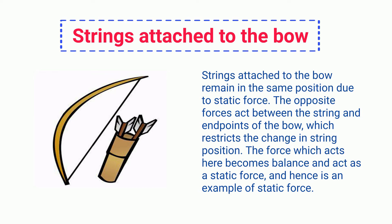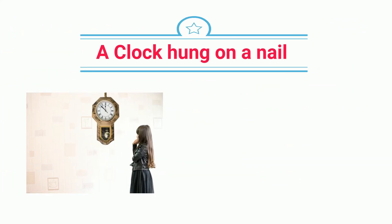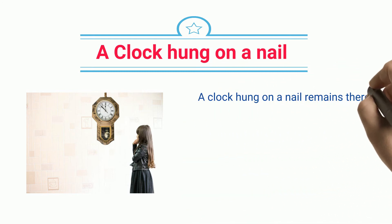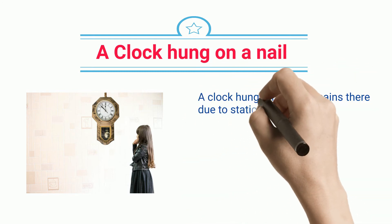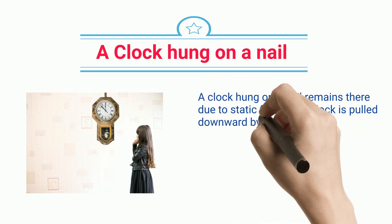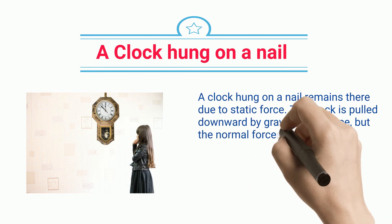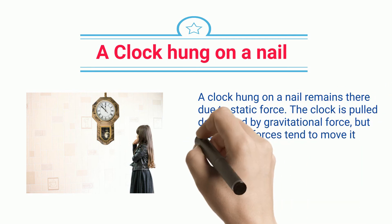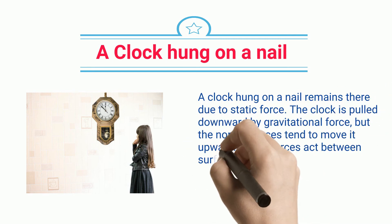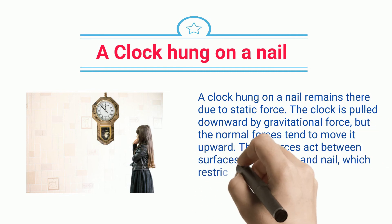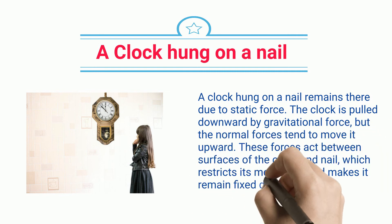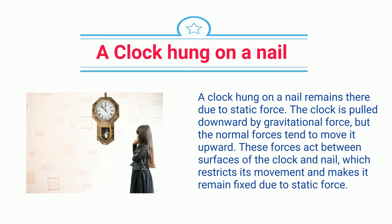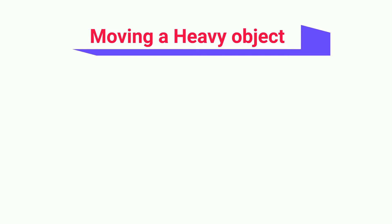A clock hung on a nail remains there due to static force. The clock is pulled downward by gravitational force, but the normal forces tend to move it upward. These forces act between the surfaces of the clock and nail, restricting its movement and making it remain fixed due to static force.